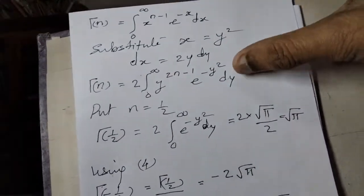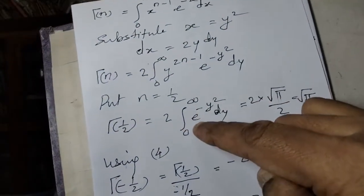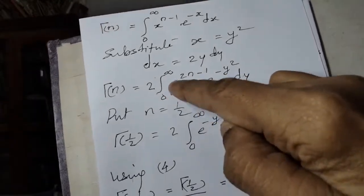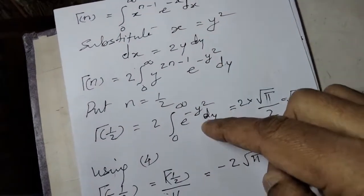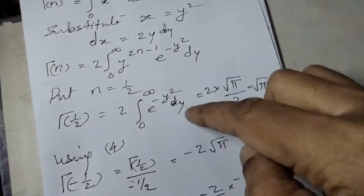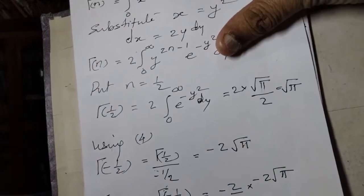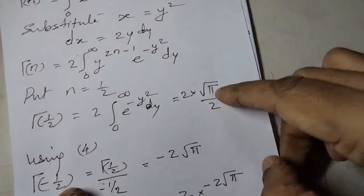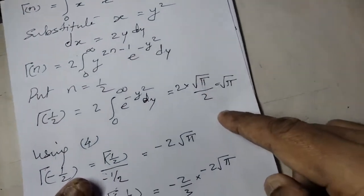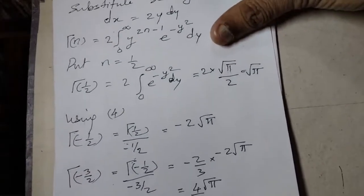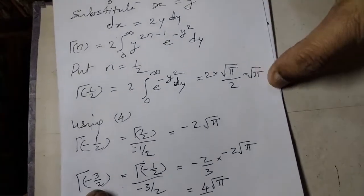Setting n equals 1/2: gamma(1/2) equals 2 times the integral from 0 to infinity of e raised to minus y squared, dy. The exponent becomes 2 times (1/2) minus 1 = 0, so y raised to 0 equals 1. This is a standard integral: the integral from 0 to infinity of e raised to minus y squared dy equals root(pi) divided by 2. Therefore gamma(1/2) equals 2 times root(pi)/2 = root(pi).